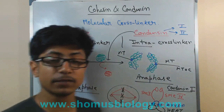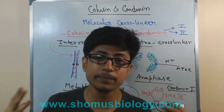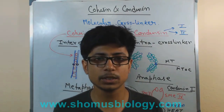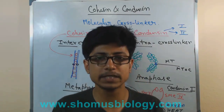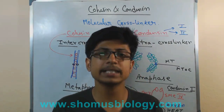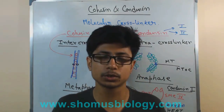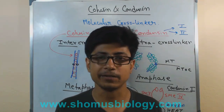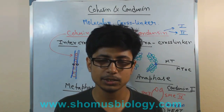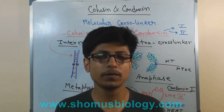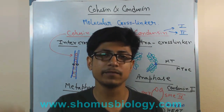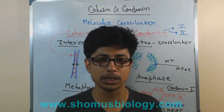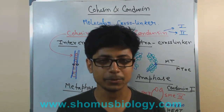So this is the overview of cohesin and condensin — their functionality is to maintain chromosomes at the metaphase plate and then to separate those chromatids to the opposite poles during anaphase. If you like this video, don't forget to subscribe, hit the like button, share this video with your friends on social networks, and thank you.